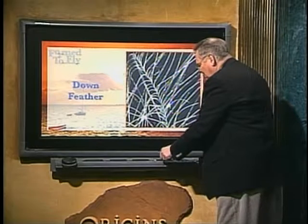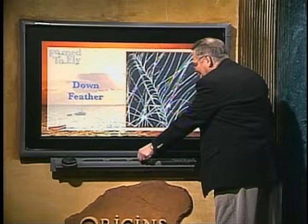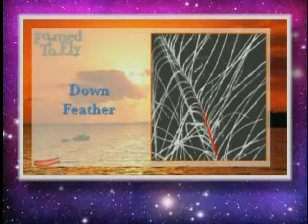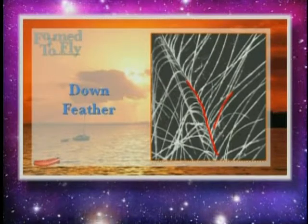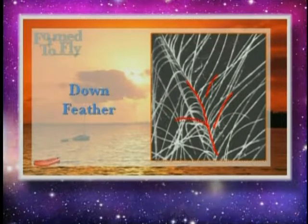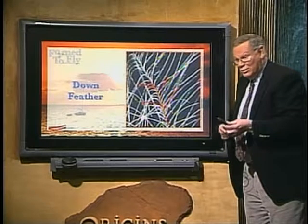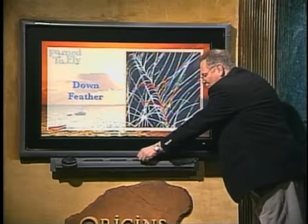Before the break: this simplest case is a down feather — it looks a lot like Charlie Brown's Christmas tree. It has a shaft like any feather, but the barbs are widely separated and don't stick together, so it's fuzzy. When we come back, we'll see how in the kind of feather we're most familiar with, these barbs all hook together using basically Velcro.